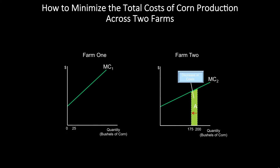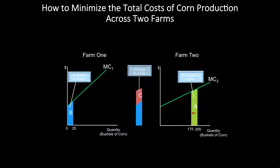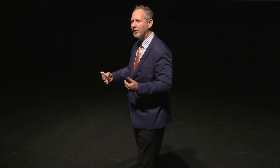Now, of course, we're producing 25 fewer units. So let's make up for that by producing 25 more units on farm one. Now our costs go up by area B. By comparing area A and area B, we can see that our costs have fallen by more than they have risen.